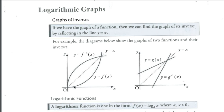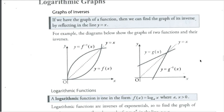If we have y equals f(x), the graph of the inverse function, which undoes what f(x) does, is the reflection of y equals f(x) in the line y equals x. This gives us y equals f inverse of x, written as f to the negative 1 of x. Similarly, reflecting y equals g(x) gives us y equals g to the negative 1 of x.